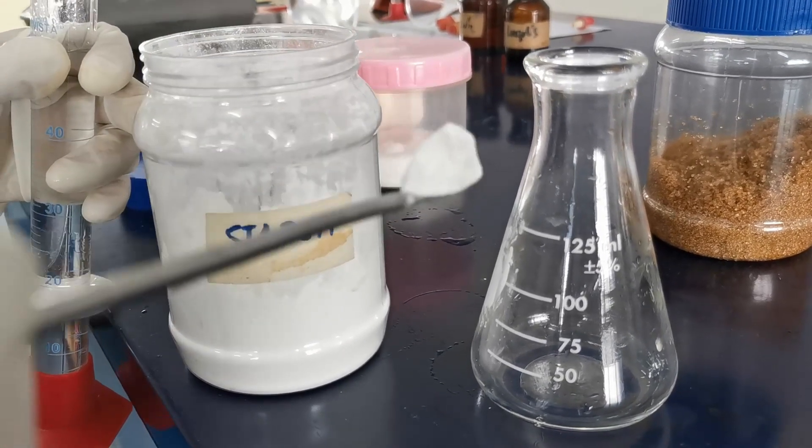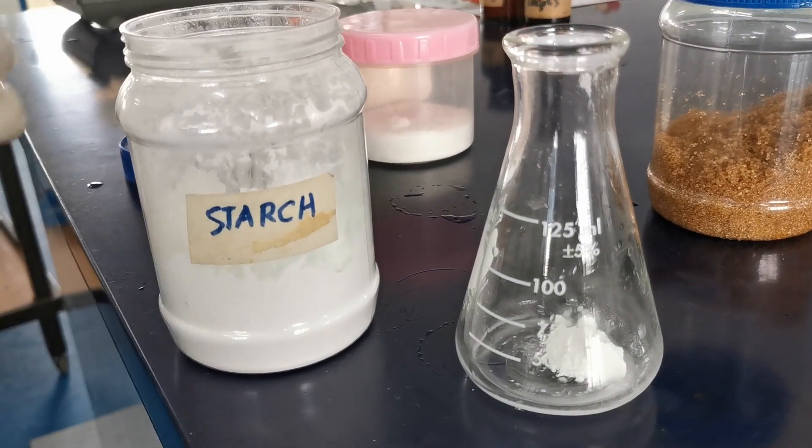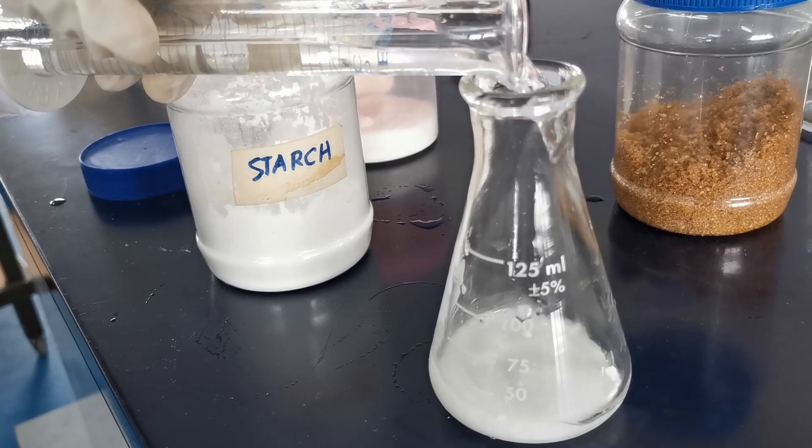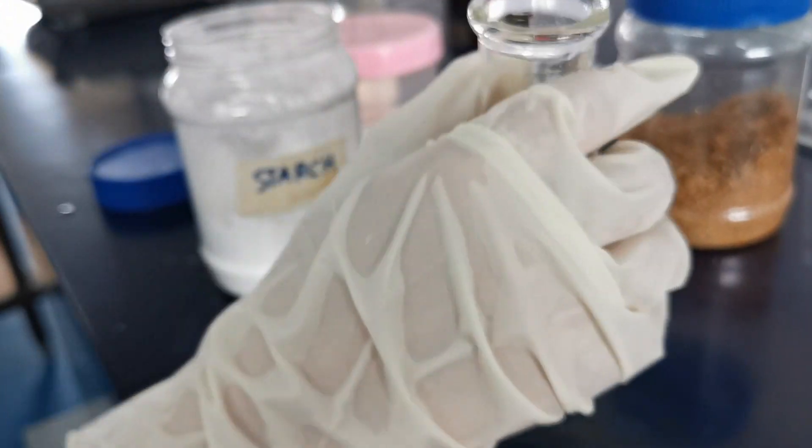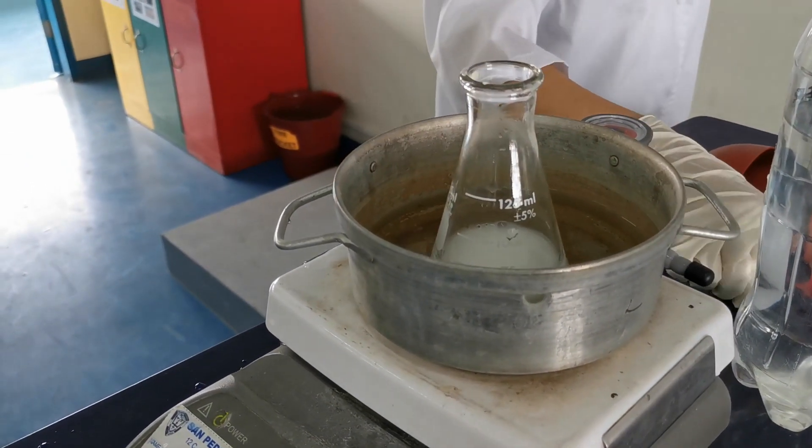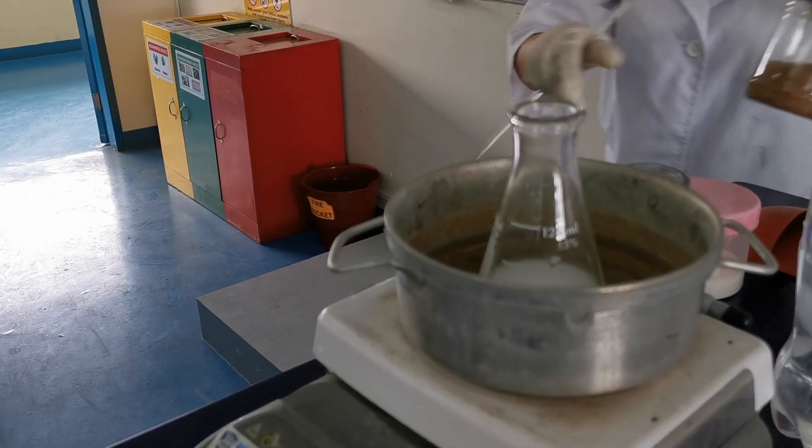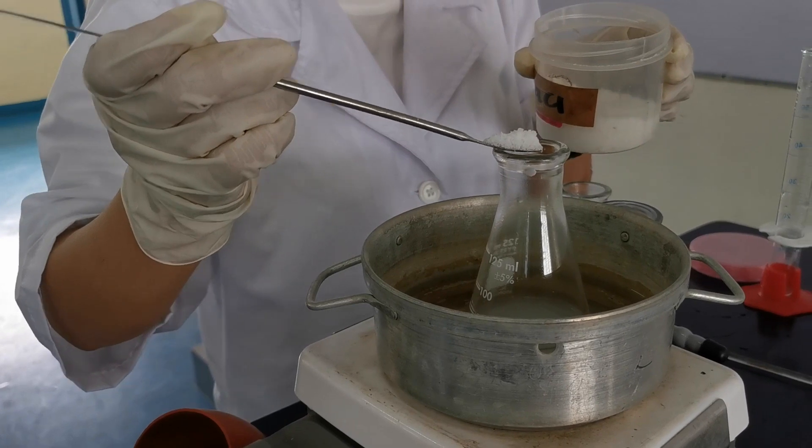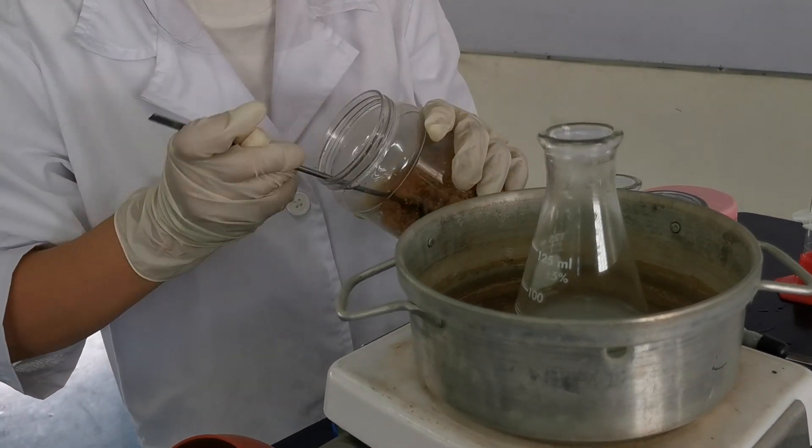Next, we prepare a starch solution by mixing 1 teaspoon of starch and distilled water and heat using the hot plate. Do not let the solution boil. Afterwards, we add 1 tablespoon table salt and 2 tablespoons table sugar. Stir and let it cool.